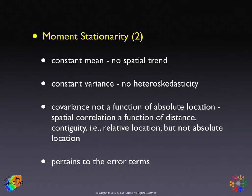Specifically, what moment stationarity implies for the mean is that there is no spatial trend. The mean of our random variable has to be the same no matter where we are. Now, in most practical applications there is a spatial trend, so we deal with that by taking the trend out. After we take the trend out, we are left with a new random variable that has a constant mean. For example, this is why in computing Moran's I, we take the variable as deviations from the mean.